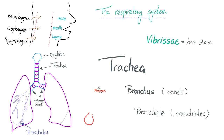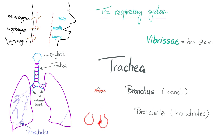What are the alveoli? Teeny-tiny sacs. What's the function? Two functions. Number one: gas exchange. Number two: secrete surfactant. Gas exchange means getting oxygen into your body and getting carbon dioxide away from your body. Why do you need surfactant? Surfactant is anti-surface tension. Surface tension wants to collapse your lungs. The surfactant prevents lung collapse so that you can breathe.